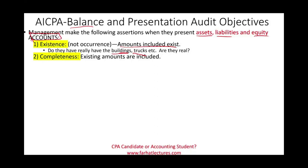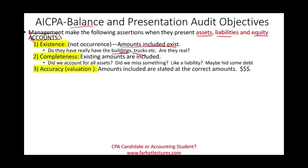Completeness: did they account for all assets? Did they account for all liabilities? Maybe they're hiding some debt and didn't account for everything. Our job is to collect evidence about those accounts regarding completeness. Accuracy, also called valuation: is the amount stated at the correct dollar amount? Did we include all the necessary costs when we bought inventory and fixed assets? Do we have the proper cost for those assets?